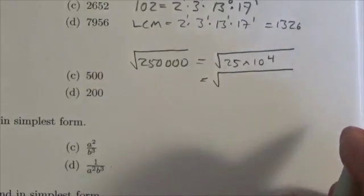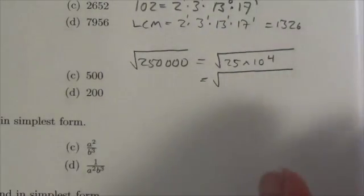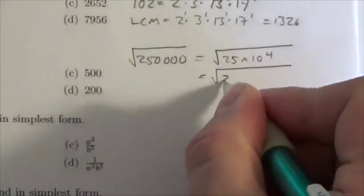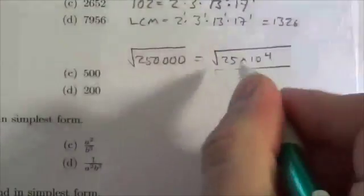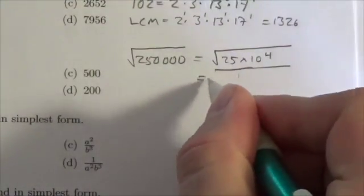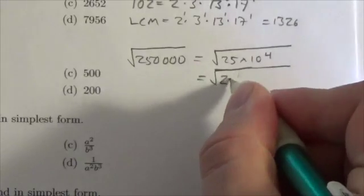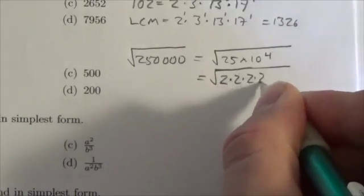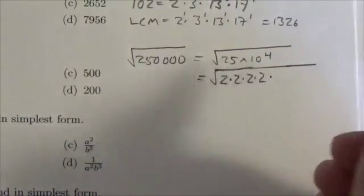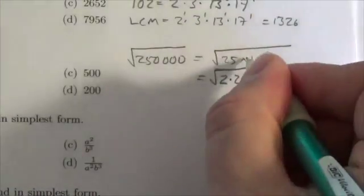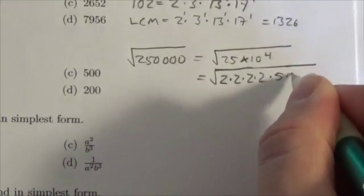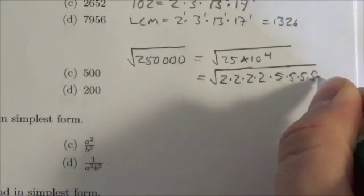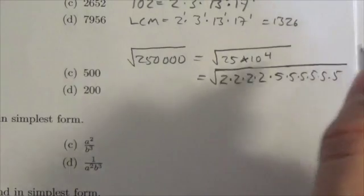10 to the 4 is gonna have four twos in it and four fives — it's four tens. I'm going to have four twos: 2 times 2 times 2 times 2, and then I'm gonna have six fives — four fives from the 10 to the 4 and then a couple of fives from the 25. So it's gonna be 5 times 5 times 5 times 5 times 5 times 5.